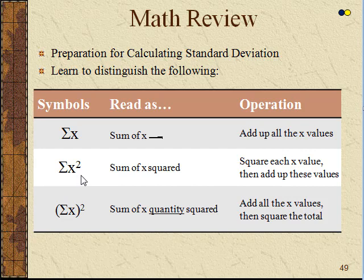This is sum of x squared, or Σx². You read that as 'sum of x squared,' and in this case you square each value of x and then add up all those values. You're adding up the squared values.